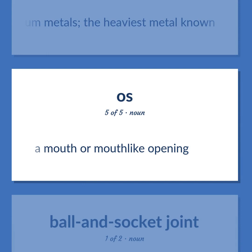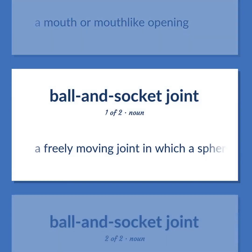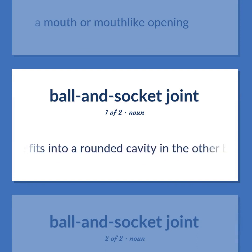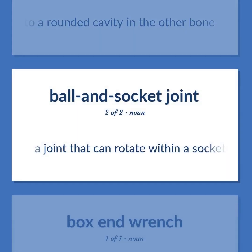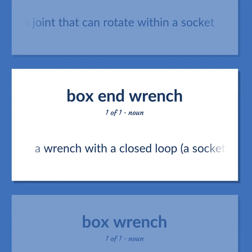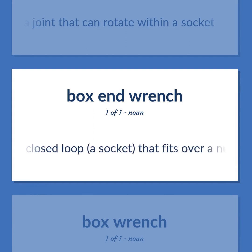A mouth or mouth-like opening. A freely moving joint in which a sphere on the head of one bone fits into a rounded cavity in the other bone. A joint that can rotate within a socket. A wrench with a closed loop — a socket that fits over a nut or bolt head.